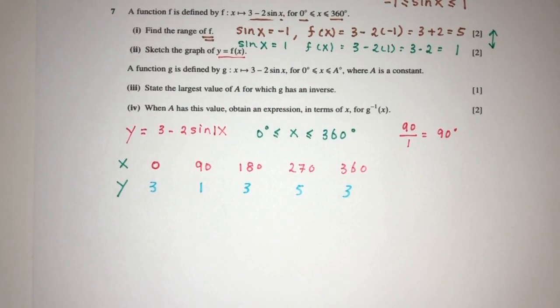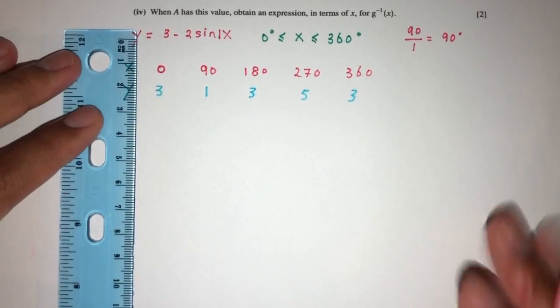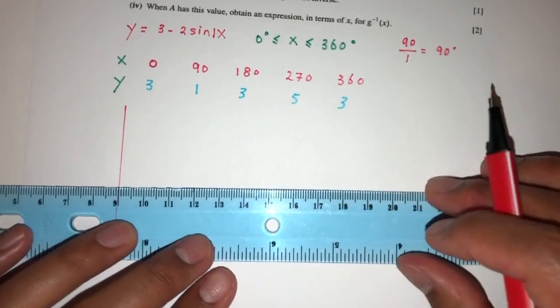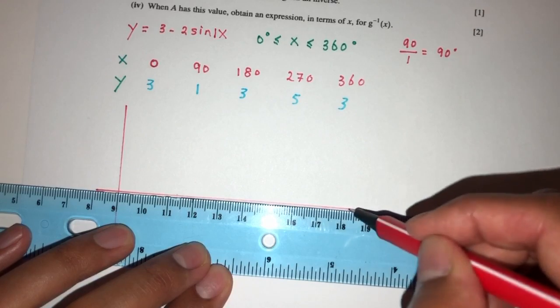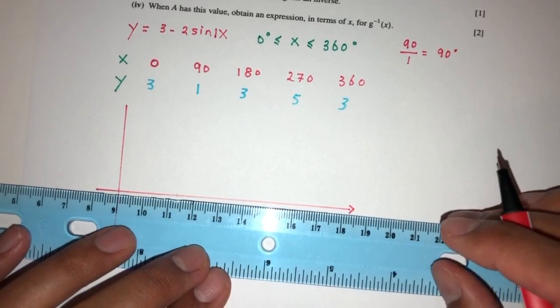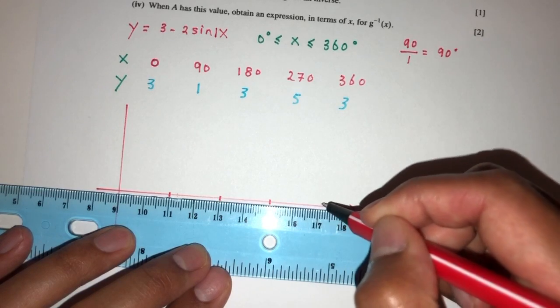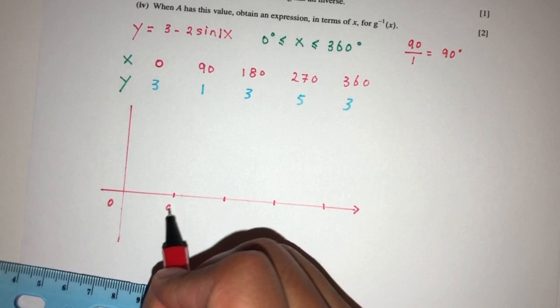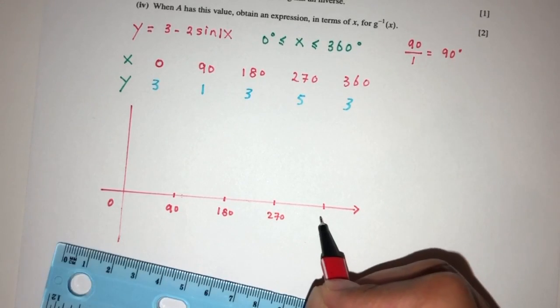Okay, so here we can sketch the graph. Again, it is best to use a ruler to kind of draw your axis, right? And that will be my y-axis. This is the x-axis. I can mark this approximately. Okay, that will be 0, 90, 180, 270, and 360.